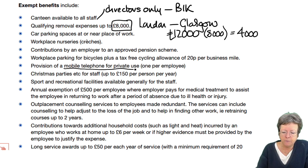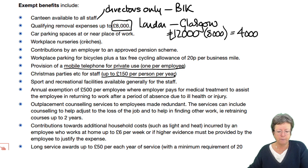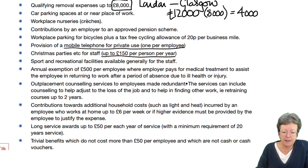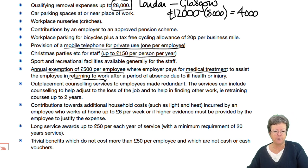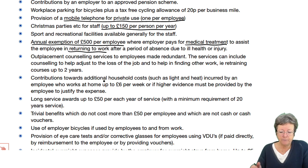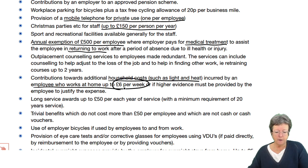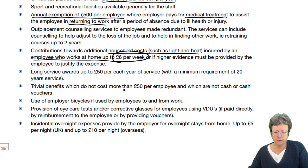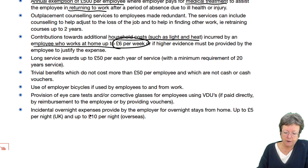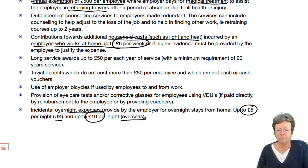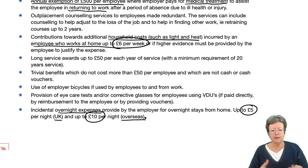One mobile phone is exempt. Christmas parties or entertaining up to £150 per person. £500 annual exemption per employee for medical treatment to help you return to work after absence. Contributions towards household costs such as heat and light where you work from home — £6 a week. Incidental costs of overnight expenses: £5 a night in the UK and £10 a night if you're overseas. So those are just a few of them.